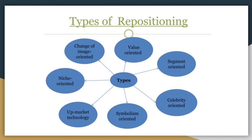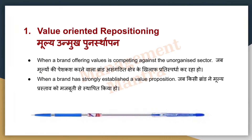Next are the types of brand repositioning. First is value orientation, second is segment orientation, third is celebrity orientation, fourth is symbolic orientation, fifth is upmarket technology, sixth is niche orientation, and seventh is change of image orientation.